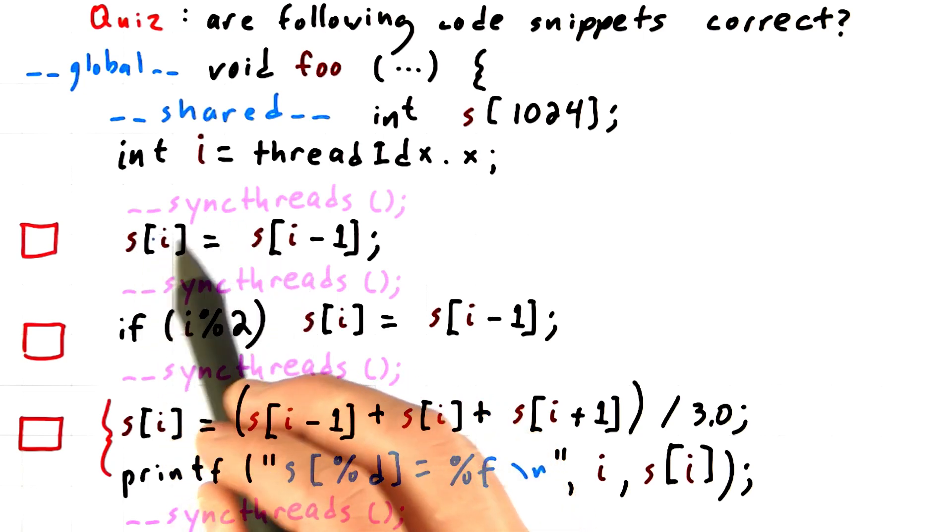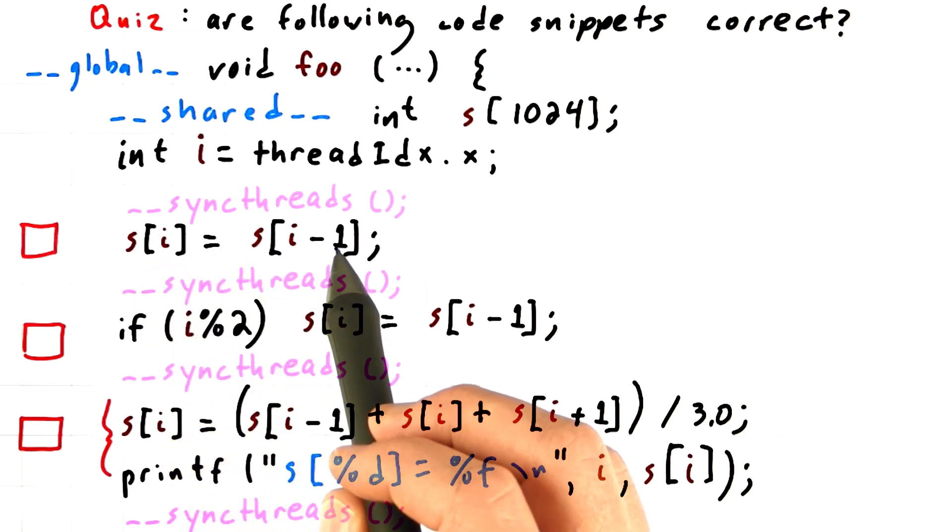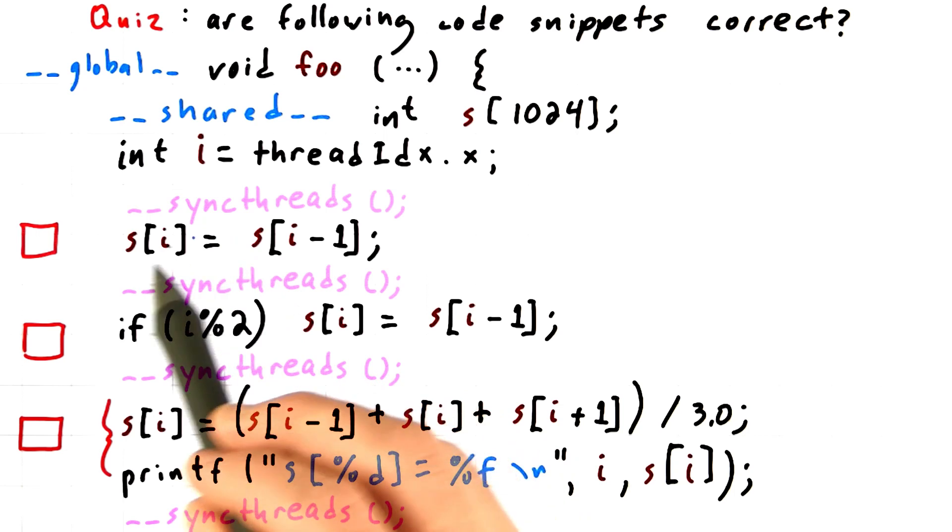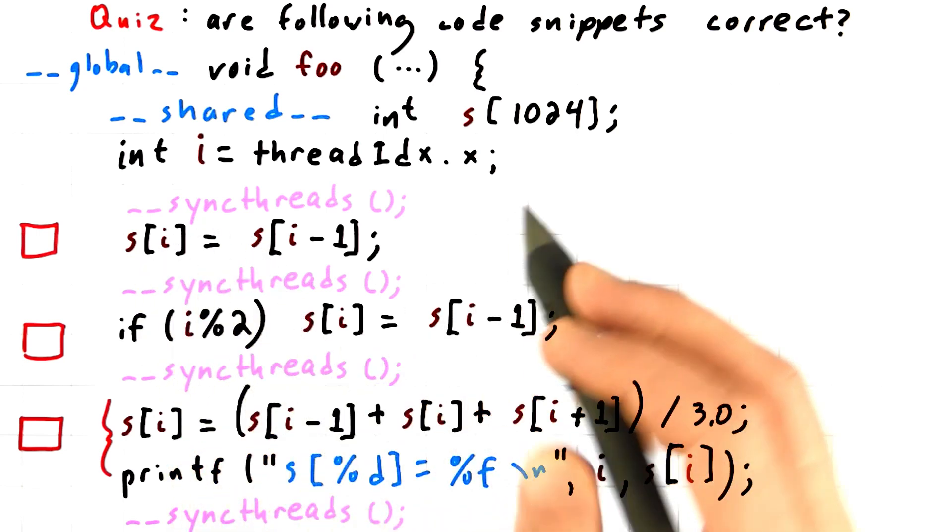And since they could be, one thread's s sub i minus 1 is another thread's s sub i, then there's absolutely the potential for a collision here.